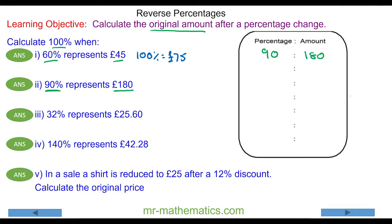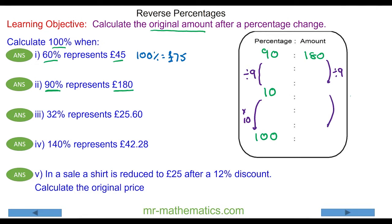For question two, 90% represents £180. We put 90 in the percentage column and 180 in the amount column, and we're trying to work out 100%. 10 is a factor of both 90 and 100, so we divide 90 by 9 to make 10, and then multiply by 10 to make 100. We do the same to both sides — divide by 9 and then multiply that answer by 10.